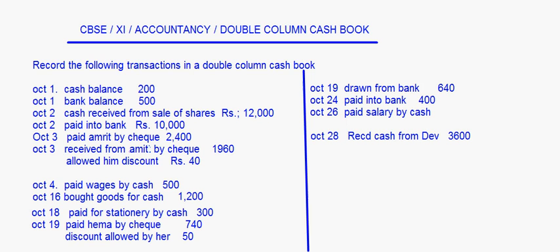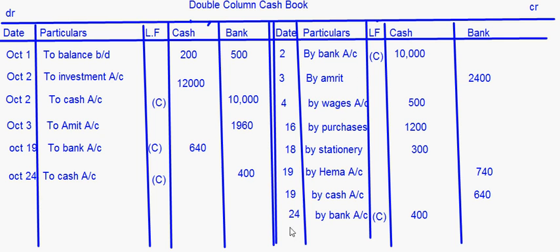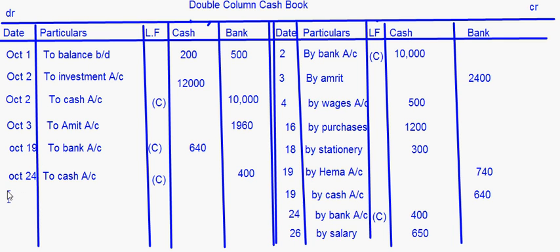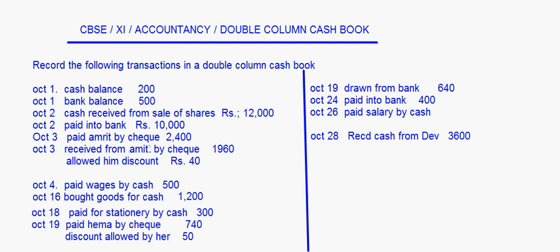October 26th: paid salary by cash — write 'by salary account' in the cash column as 650 rupees. October 28th: received cash from Dave 3,600 — this is a receipt, so write 'to Dave account' in the cash column as 3,600. That completes all the transactions entered into the double column cash book.